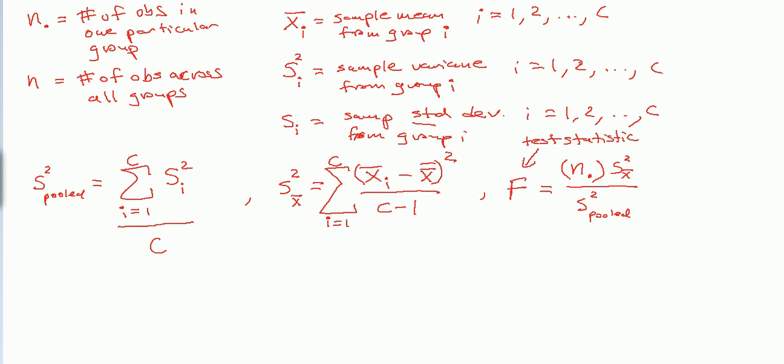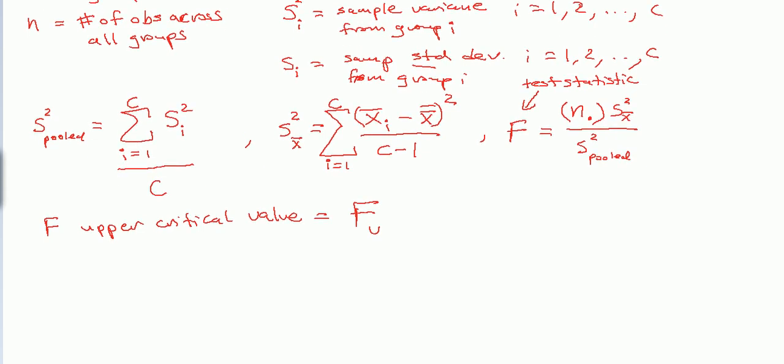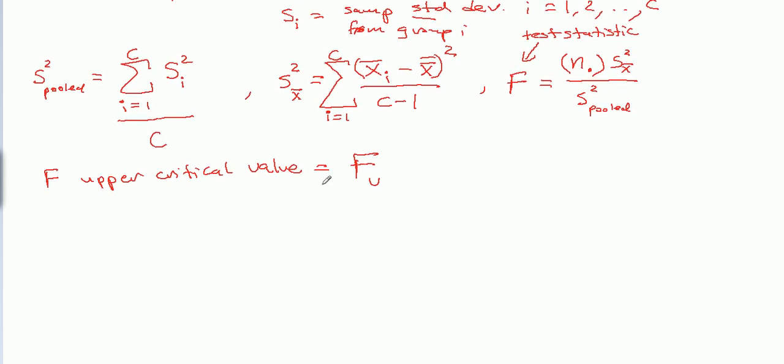So there's just one n-dot number. And this will give us our test statistic. And once we have our test statistic, we're done calculating things, we go to a table, and we get what's called f upper critical value, which you can just write f with a subscript u. You go to a statistical table, which when we get to an example, I will show you how to get a value from this table. You go to the f table, you need three items.